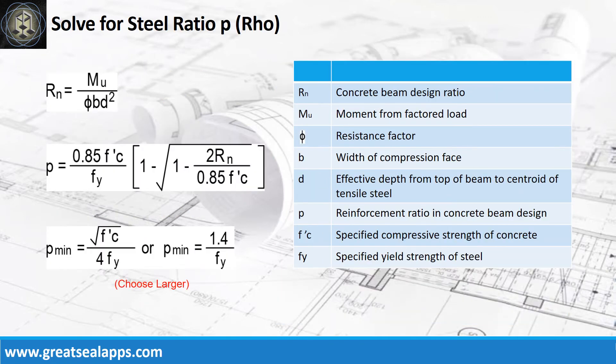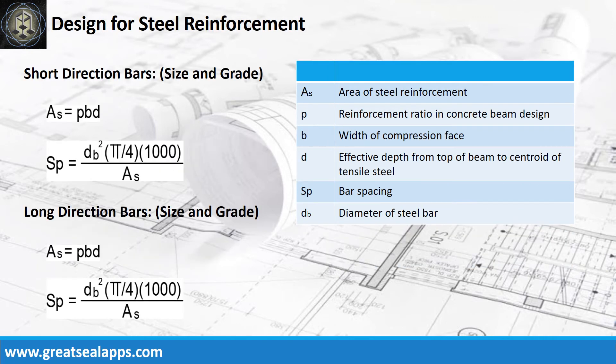Solve for concrete beam design ratio RN and reinforcement ratio rho for all corresponding moments, and check each value for minimum rho required by ACI code. Solve the area of steel and equivalent bar spacing corresponding to short and long direction bars.